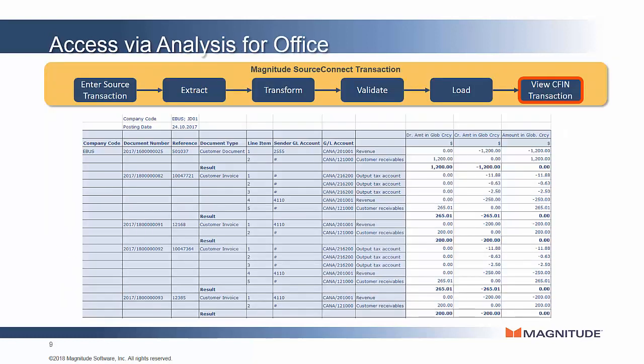Because the transaction is now interfaced into the Universal Journal, it can be accessed by any means, including Analysis for Office as you see here on the screen. SourceConnect Transaction encapsulates and productizes the complex steps necessary to extract, transform, load, and validate the data as it moves from source into Central Finance.